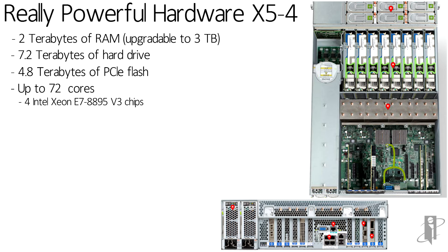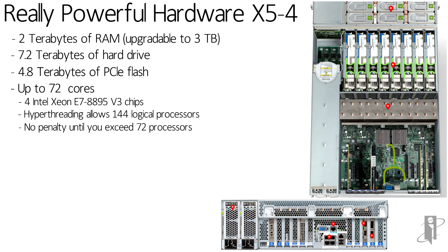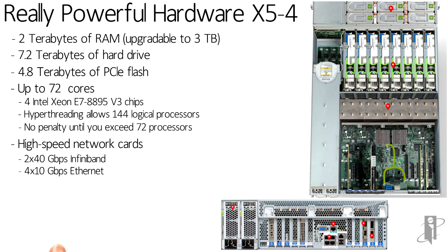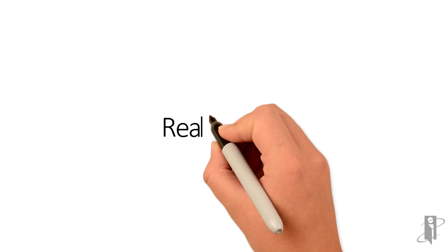You can get up to 72 cores on the X5-4, which uses Xeon E7-8895 v3 chips. These chips are really interesting — they were made specifically for the Exalytics box and have variable processor speeds. With a light workload it shuts down some processors and speeds up others to maximize performance. With hyper-threading, those chips can go up to 144 logical processors, with no penalty until you exceed the first 72. It also comes with high-speed InfiniBand network cards to connect to other Exa-series products, plus high-bit Ethernet and the Linux OS.